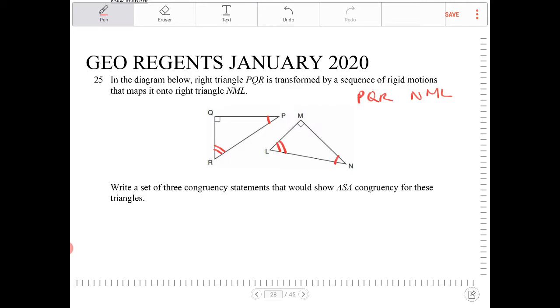So it says here, write a set of three congruency statements that would show ASA. So I've just demonstrated the two angles already. So I know that angle P will be congruent to angle N. And I also know that RP is congruent to LN.